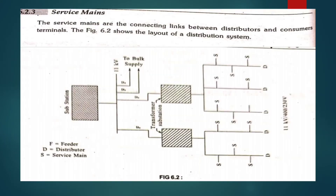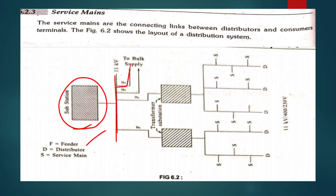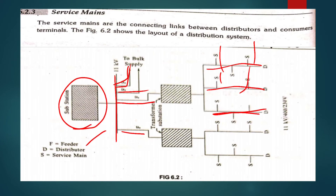Service mains are the connecting links between the distributor and consumer terminals. Service mains are the cables used for local purposes. From the substation bus bar, the feeders carry power, then the distribution line has a number of tappings — that is the distributor — and then the service mains connect to the individual consumers. So feeders, distributors, and service mains are the three parts of the distribution system.